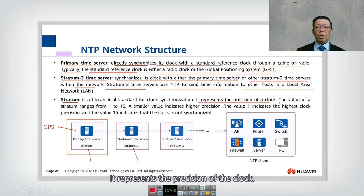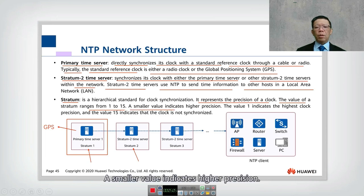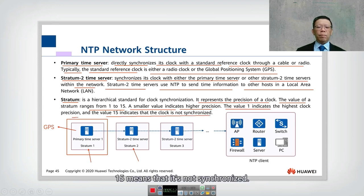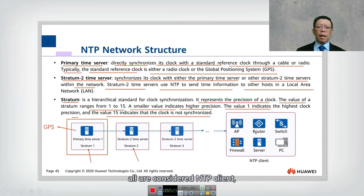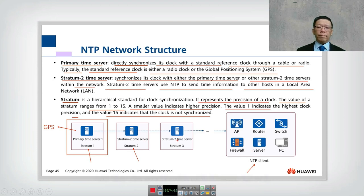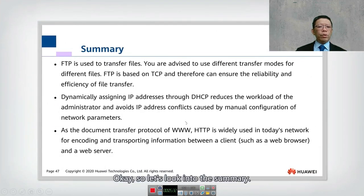Stratum is a hierarchical standard for clock synchronization and represents the precision of the clock. The stratum value ranges from 1 to 15: a smaller value indicates higher precision, 1 indicates the highest level of precision, and 15 means the device is not synchronized. Once you have a stratum-1 source, it synchronizes stratum-2, which synchronizes stratum-3. Access points, routers, and switches are all considered NTP clients and can synchronize with stratum-1, -2, or -3 servers.